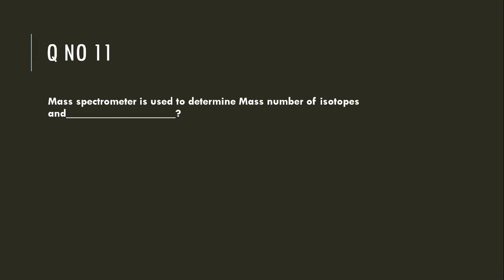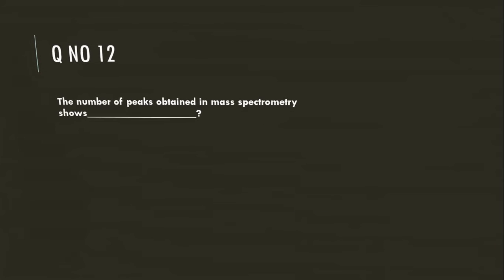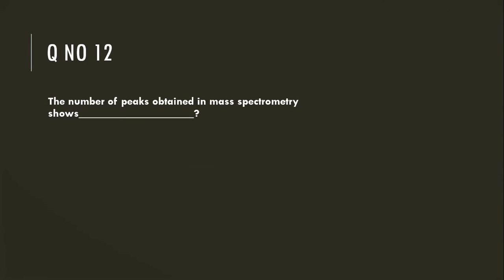A mass spectrometer is used to determine the mass number of isotopes and their relative abundance. The number of peaks obtained in mass spectrometry shows the number of isotopes.